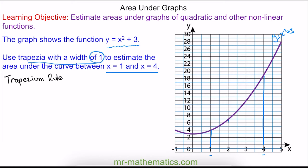So we have between x equals 1 and x equals 2, which is this trapezium here. Between x equals 2 and x equals 3, which is this one here. And between x equals 3 and x equals 4. And to work out the height of each trapezium, I'm going to draw a horizontal line from the curve to the y-axis.